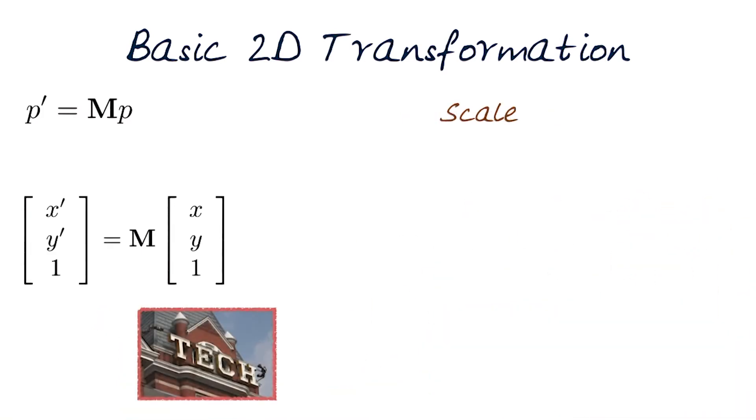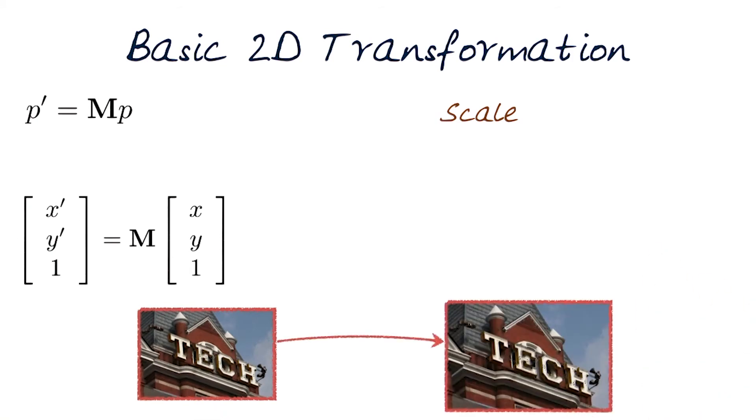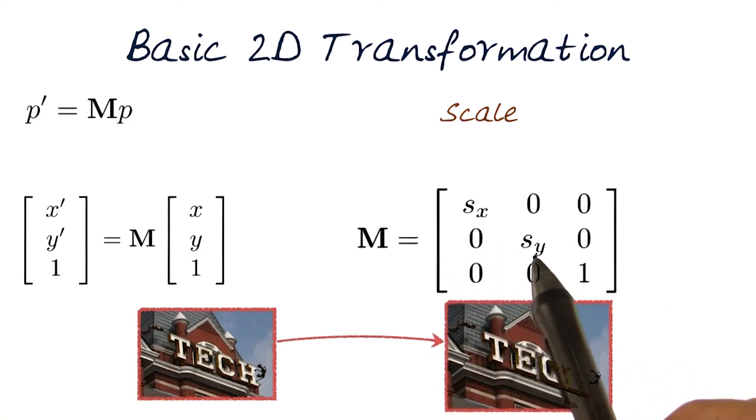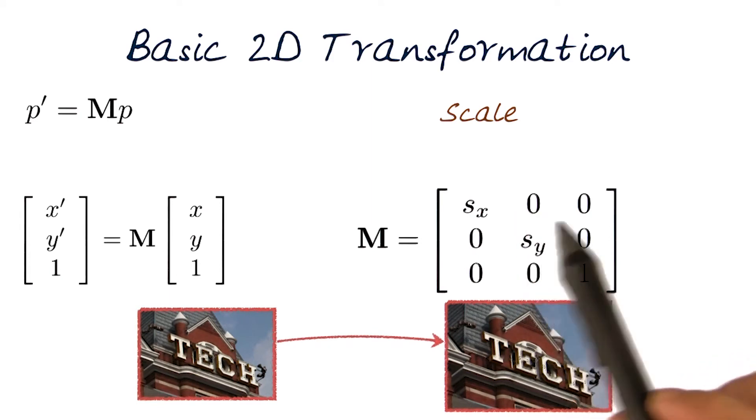What about scale? Again, here the goal is to go from this image to a larger image. In this case, again, what we did before, the same two by two we had looked at before, with s_x and s_y, can go into these two values here.